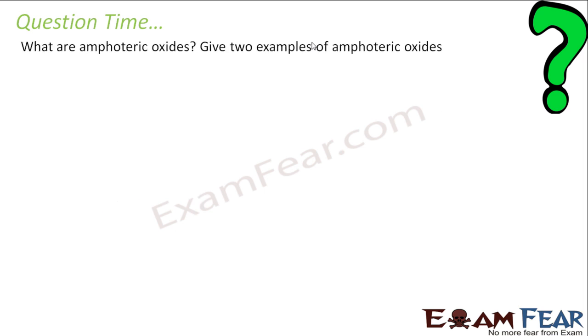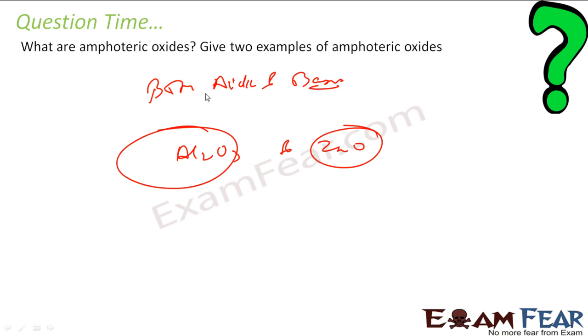What are amphoteric oxides? Give two examples of amphoteric oxides. Amphoteric oxides are oxides which are both acidic and basic. For example, Al2O3 is one and zinc oxide is one. They are all amphoteric oxides because they are both acidic and basic.